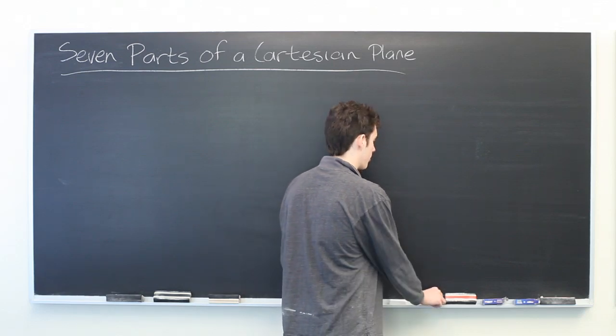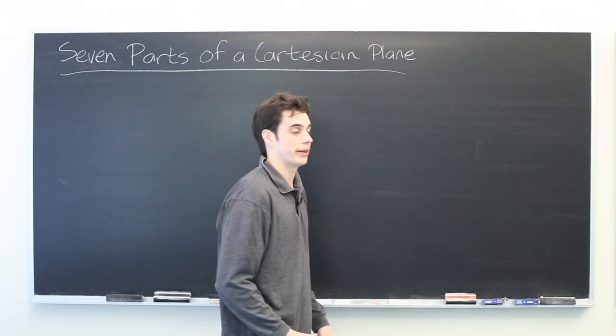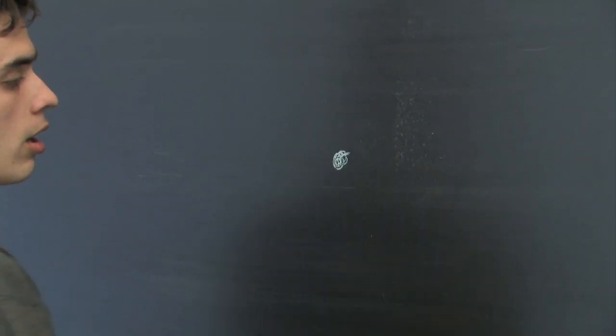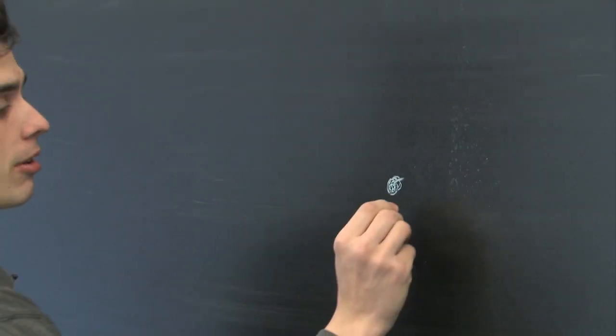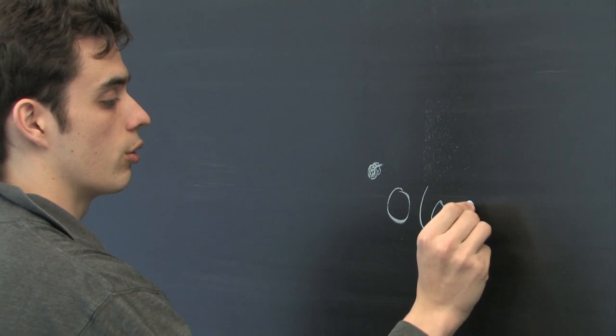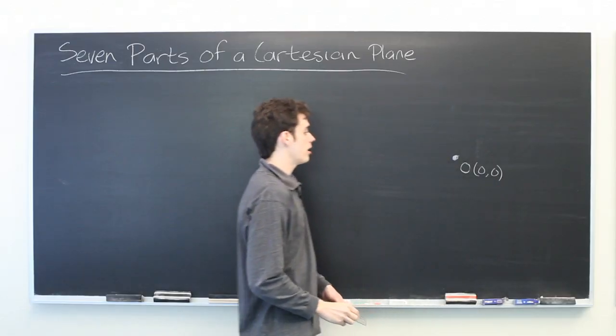So, the first and arguably most important part of a Cartesian plane is simply the origin. A single point often represented by the letter O and given by the coordinate (0,0). Easy enough.